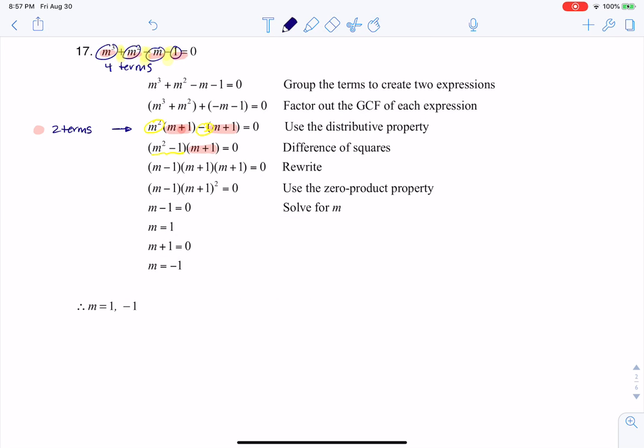Let's multiply that back out to make sure you believe it. I'm going to go m squared minus one times m plus one is equal to zero, going backwards. I'm going to double distribute. I'm going to take the m squared and multiply it to the m plus one, then take the negative one and multiply it to the m plus one.